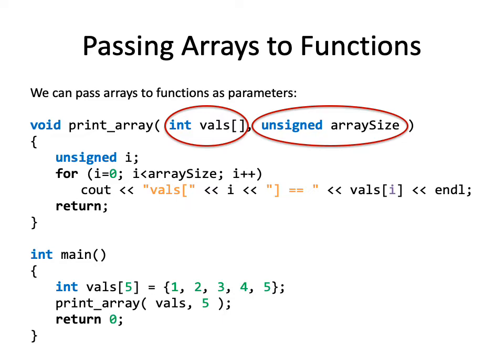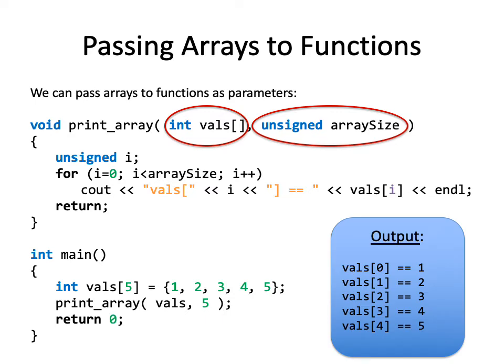Let's see what this looks like. Here's the output. So for the first element, remember the first element has index 0. That's equal to 1. Vals 1 is equal to 2. Vals 2 is equal to 3. And so on, and so on, and so on.